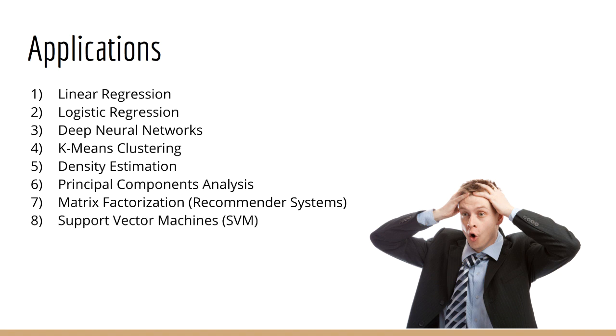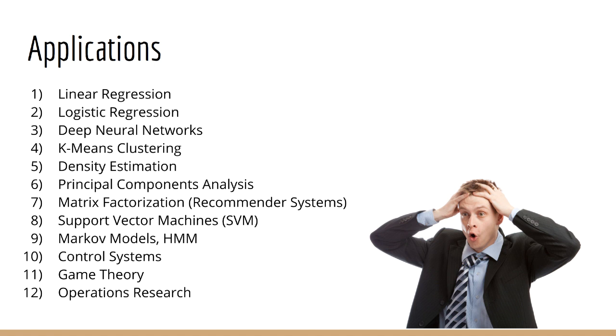Number eight, support vector machines. Number nine, Markov models and hidden Markov models. Number ten, control systems, which are technically not really machine learning today, but there is huge overlap with machine learning. Number eleven, game theory. Again, technically not machine learning, but it sneaks its way in sometimes. Number twelve, operations research, which actually shares a lot of common techniques with machine learning. And finally, number thirteen, portfolio optimization.